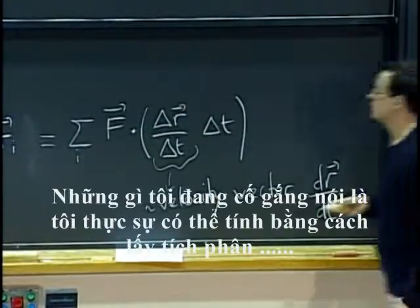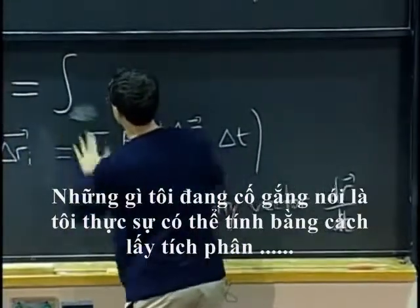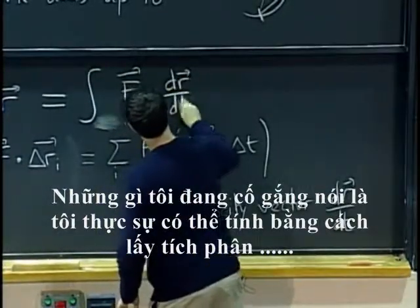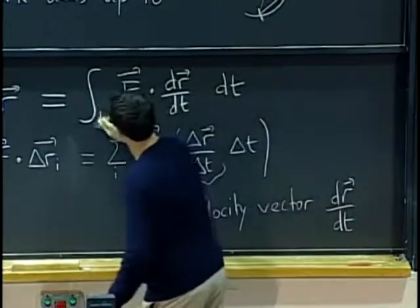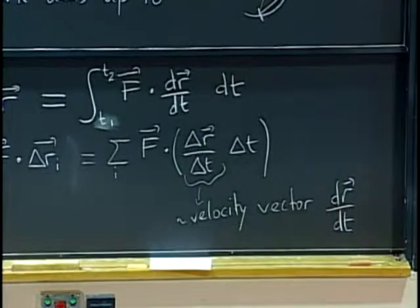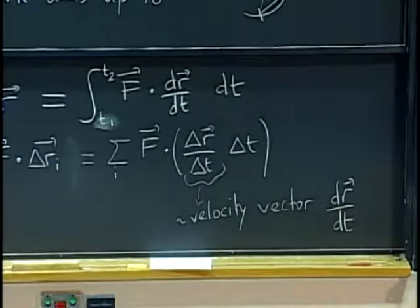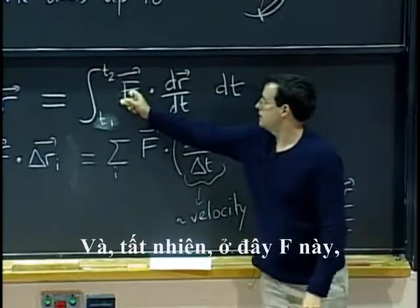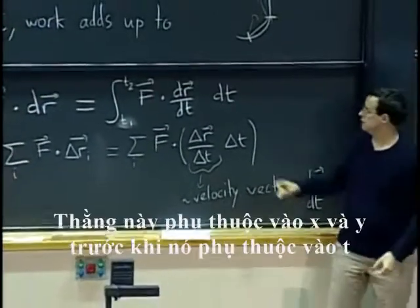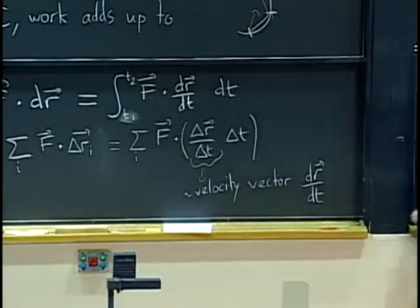So, what I am trying to say is that I can actually compute my integral by integrating f dot product with dr dt over time from whatever the initial time to whatever the final time is. I integrate f dot product velocity dt. And, of course, here when I say f, I mean f at the point on the trajectory at time t. This guy depends on x and y, therefore it depends on t.